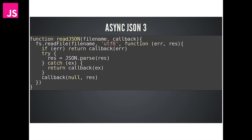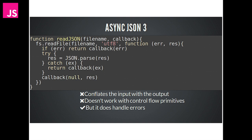We can fix that. All we need to do is make sure we're not calling the callback inside the try/catch. This code makes sure the only thing we do inside the try/catch is parse the JSON, and then we call the callback outside of the try/catch. Now this fixes the bug. We're still conflating input with output, still not working with control flow primitives, but we are handling errors. This might seem like a weird bug, but a very popular library, Jade, had this exact bug for several years and it was only fixed about a month ago. These bugs are happening in real code.